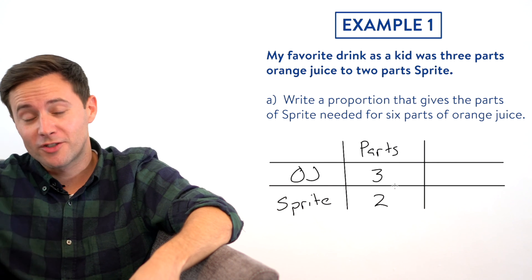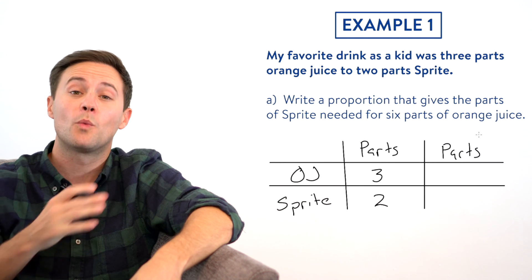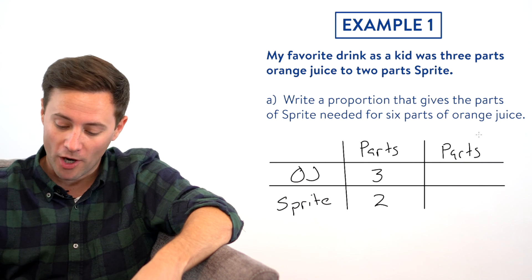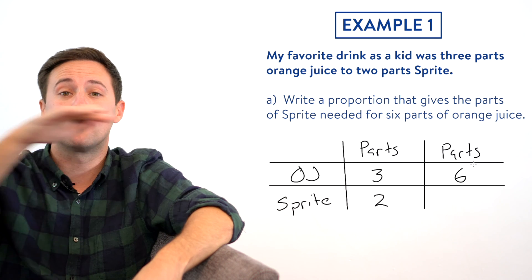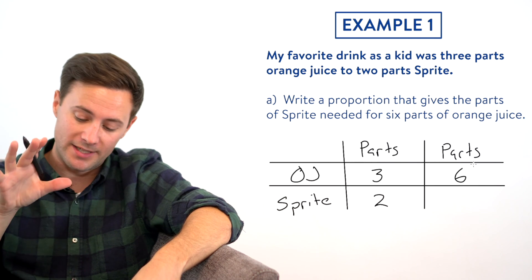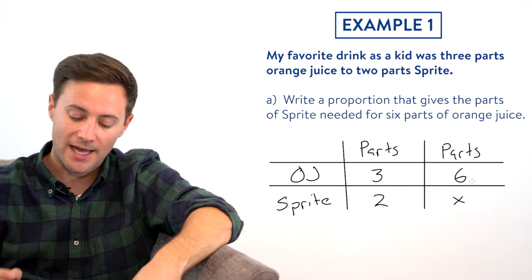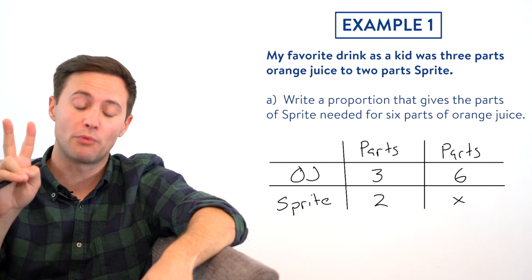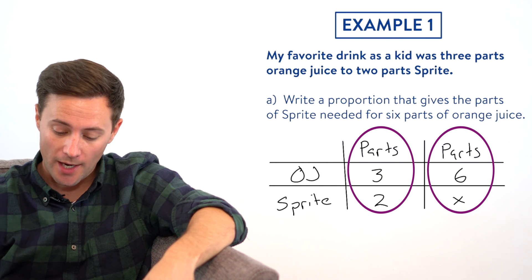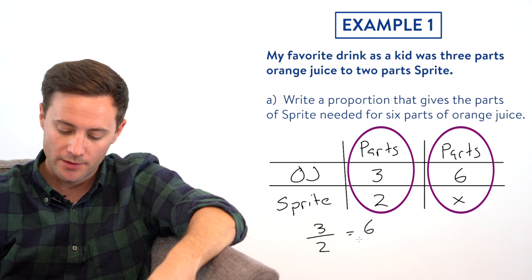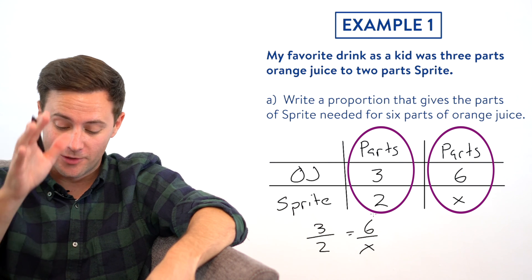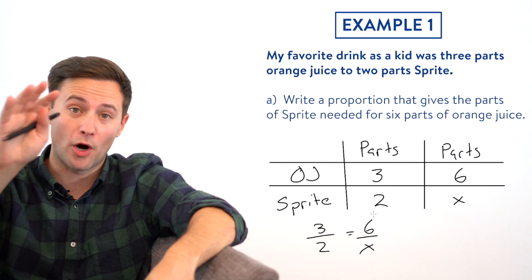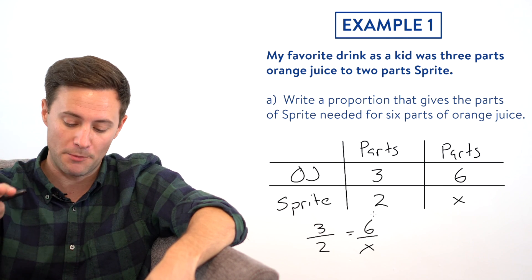Now that we have that second column, let's go to the third column. And I'm going to write parts. And this is what I am making. So I need to figure out how much Sprite is needed for six parts of orange juice. So I'm going to put a six in the row that's labeled orange juice. What we're trying to find is x, how much Sprite is needed when there's six parts of orange juice. And now we're ready to write our proportions. The numerators are the same units, parts of orange juice, and then the denominators are also the same units, parts of Sprite.